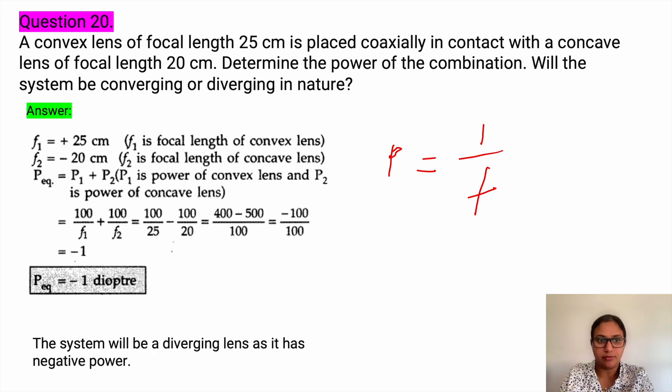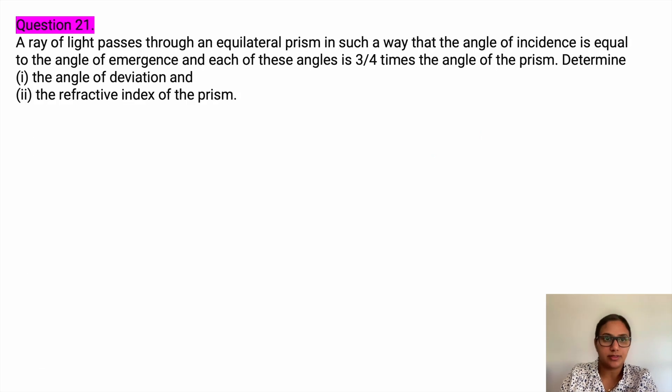Since it is a negative power, the system will act as a diverging lens. Next question.